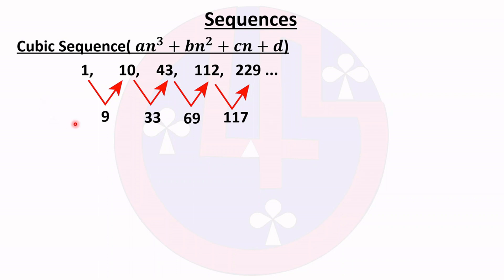Since the first differences are not the same, we find the second differences. 33 minus 9 gives 24, 69 minus 33 gives 36, and 170 minus 69 gives 48. Again, these differences are not the same.